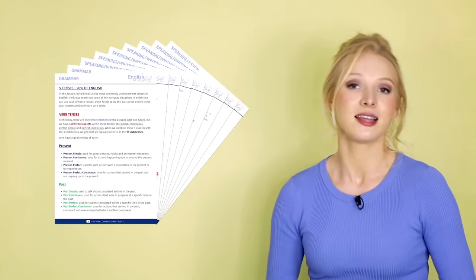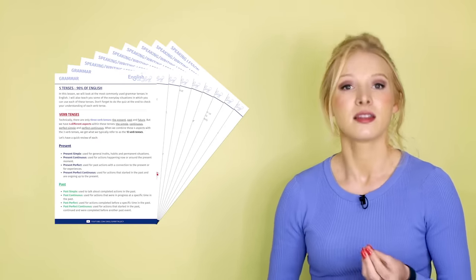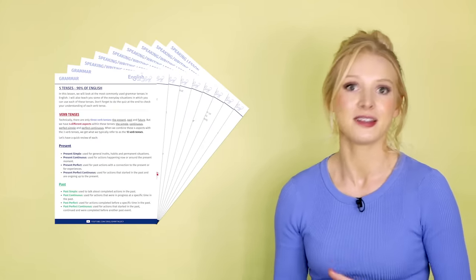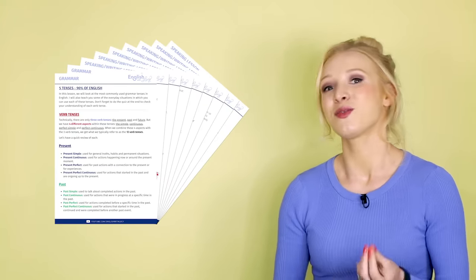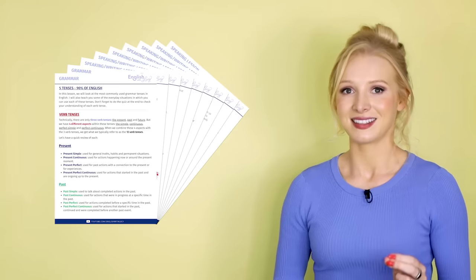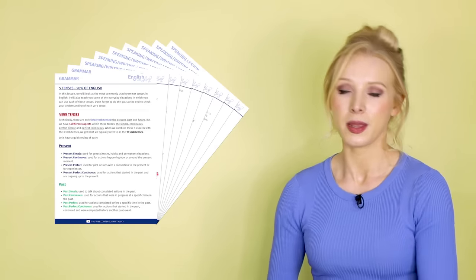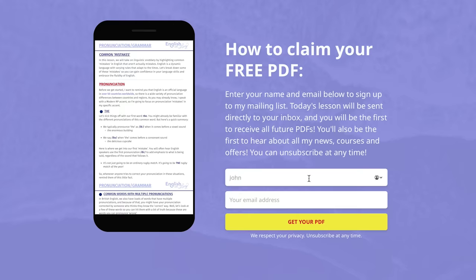We're going to improve your grammar, fluency and accuracy in the most efficient way possible. To make your life even easier, I have created a free PDF for you to download. It contains all of the information about these five grammar tenses that make up 90 if not 95% of spoken and written English. We look at them in greater detail with more examples and I've also included a quiz so you can test your understanding. If you'd like to get your free copy, all you have to do is click on the link in the description box, enter your name and your email address, sign up to my mailing list and the PDF will arrive directly in your inbox. After that, you will automatically receive my free lesson PDFs every week, plus all of my news, course information and offers.